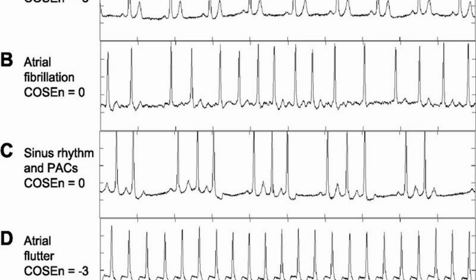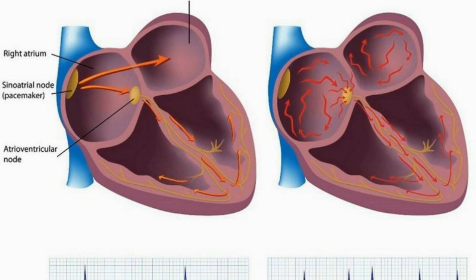Drugs can speed up or slow down heart rate. Dopamine, dobutamine, and adrenaline are commonly used to treat cardiogenic shock. Timolol, propranolol, and labetalol slow the heart down.